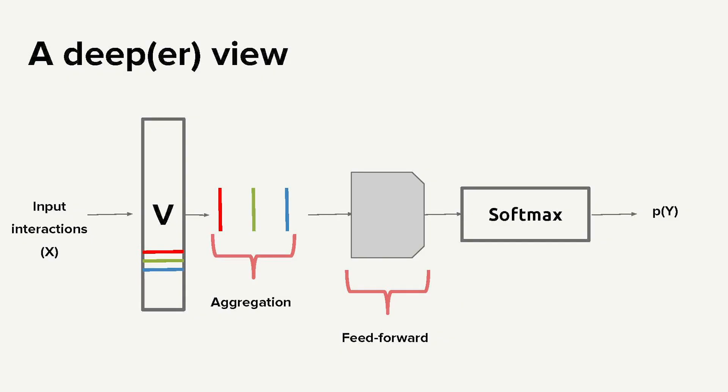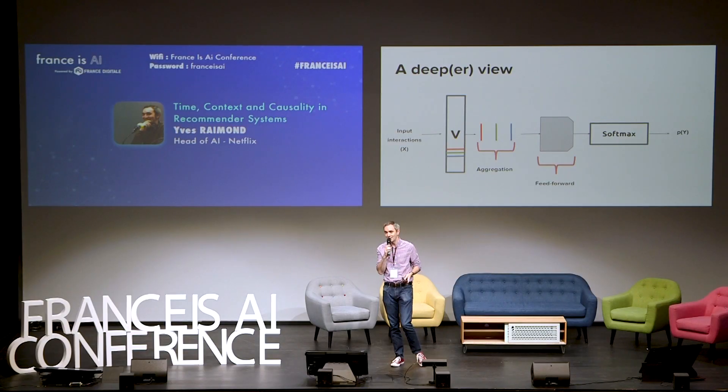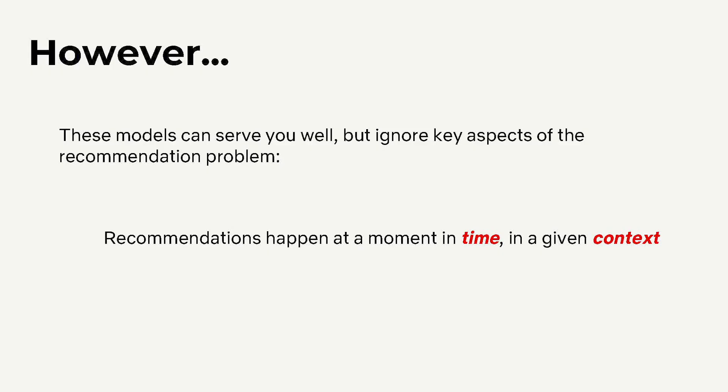Another way to tackle the problem is to treat it as a supervised problem — estimate the probability of y given a set of features. For example, using past interactions, you could embed all these past interactions to come up with a user embedding, feed that into a feed-forward neural network with a classification layer at the end, and regress directly on p of y. Both of these models are very powerful and you can get pretty good results using them.